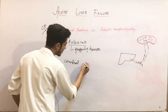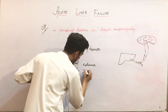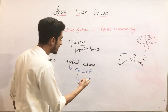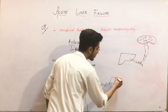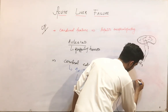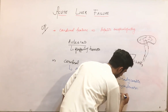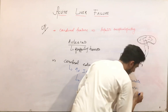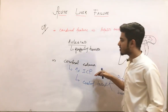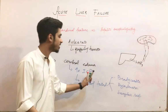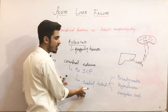Cerebral edema also develops, causing increased intracranial pressure. This results in the Cushing triad (or Cushing reflex), which consists of three signs: number one is bradycardia, number two is hypertension, and number three is irregular respiration. So in acute liver failure, cerebral edema leads to increased intracranial pressure, producing bradycardia, hypertension, and irregular respiratory rate.